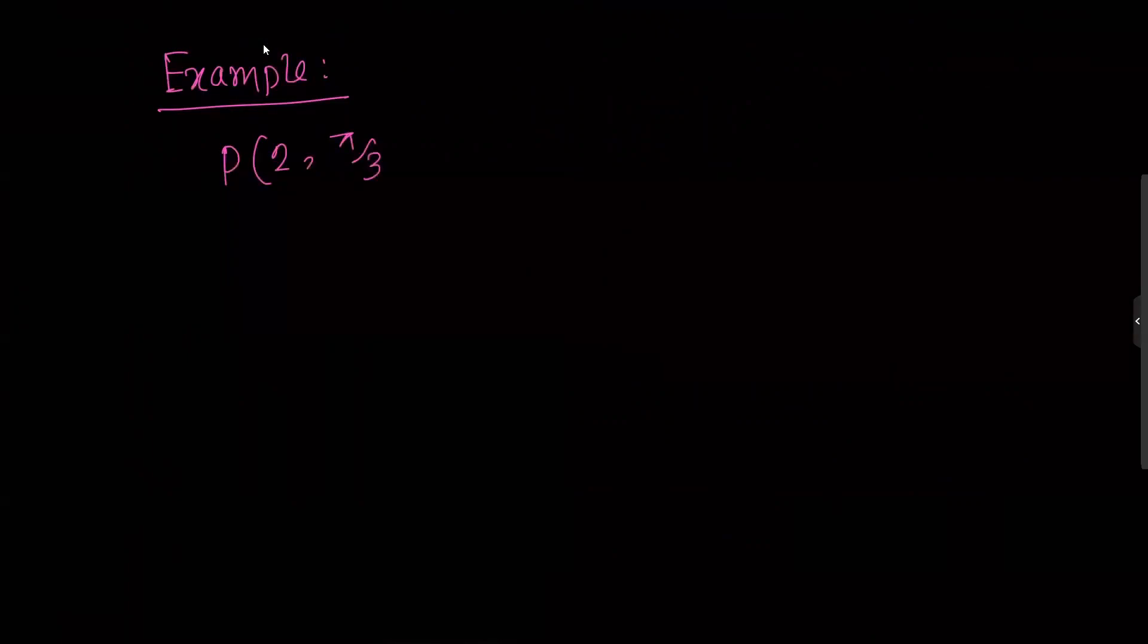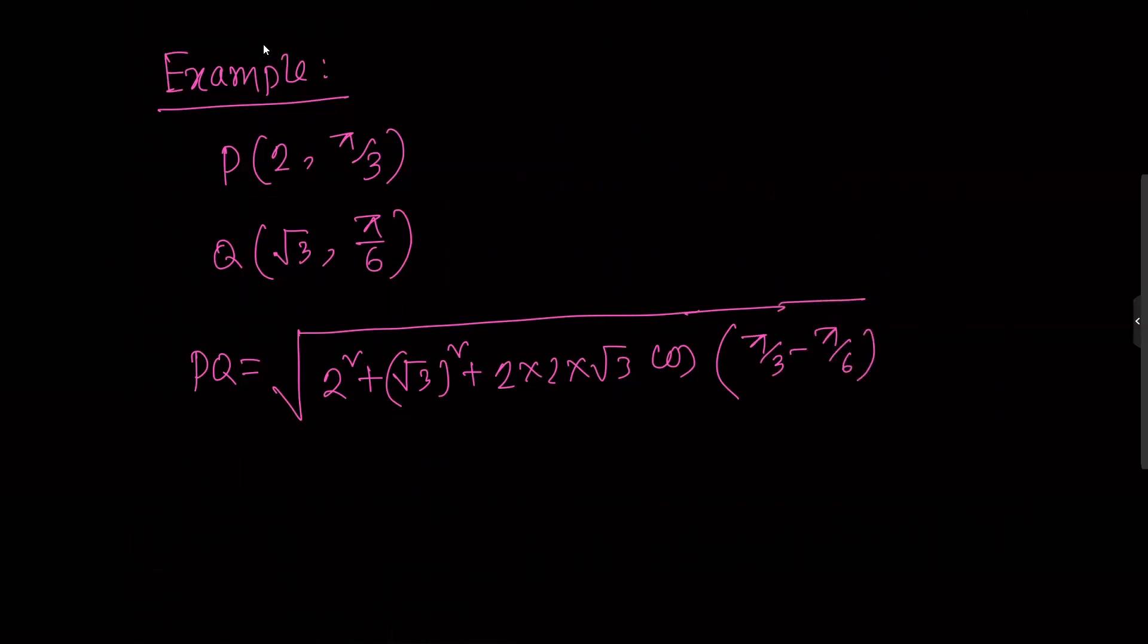Let me work through an example. Suppose we have coordinates three comma five pi by six and two comma five pi by six. Then PQ equals root over two squared plus root three squared plus two into two into root three, cosine of five pi by three minus five pi by six.